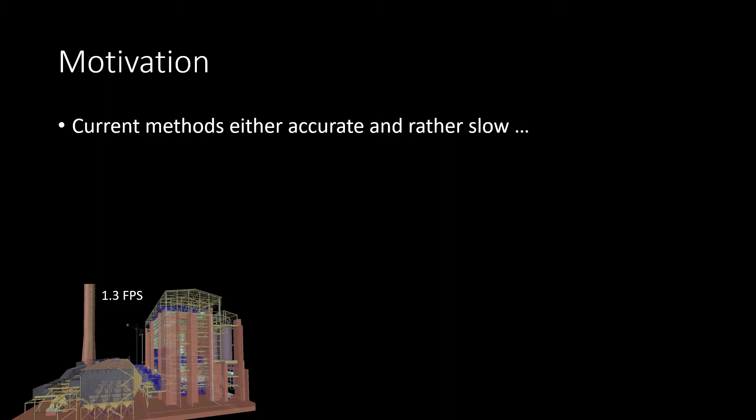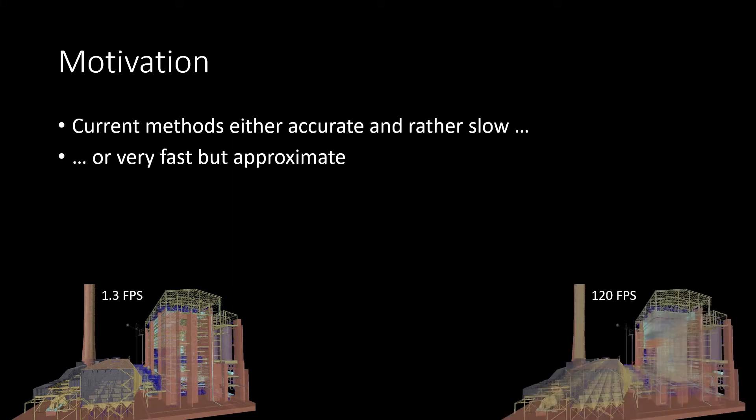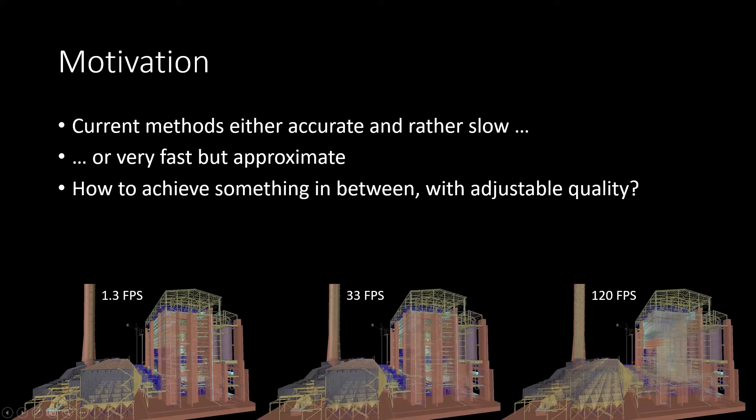Order independent transparency methods guarantee invariance to the order of submission. Current methods of OIT are either accurate and rather slow, like the depth-peeling approach we used to render this first image, or fast but quite approximate. In this case we can see there's a lot of detail missing in the center of this building compared to our depth-peeling reference. Our method is adjustable and lets us make this trade-off between quality and performance with a single parameter which is our bin count.